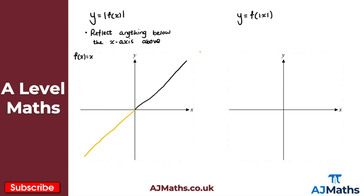So what we've got here is a sketch of y equals f(x). Now if we want to sketch the modulus of this function, like we said, we reflect anything below the x-axis above. This part here in orange we're going to reflect in the x-axis. What we're going to get is simply this V-shape. So it'll look something like this. And there we have it - that is y equals the modulus of f(x).